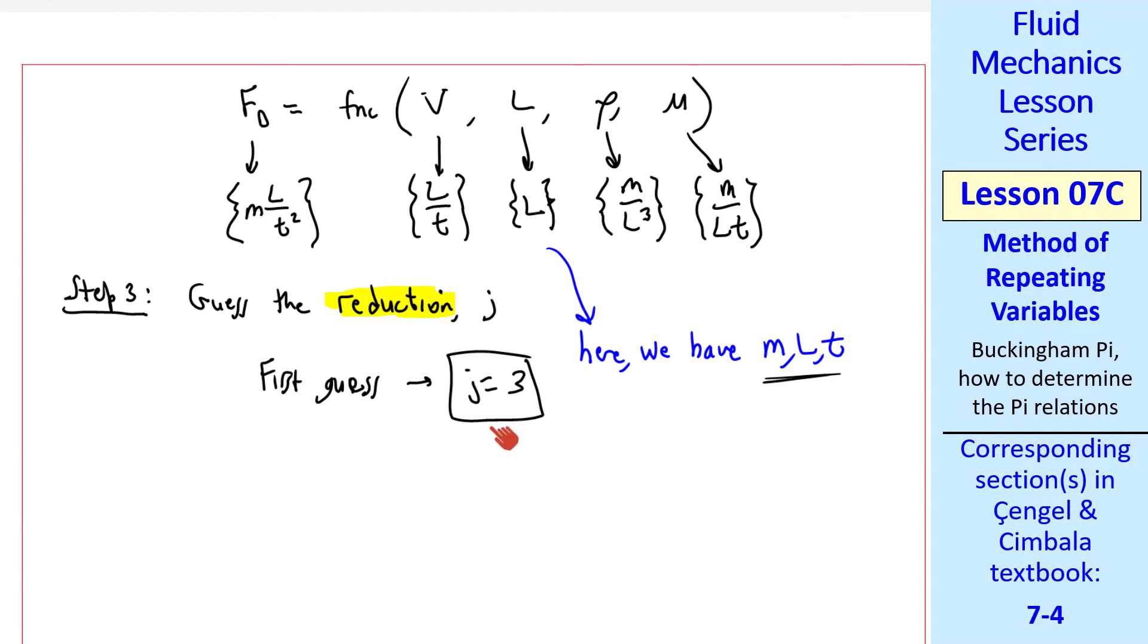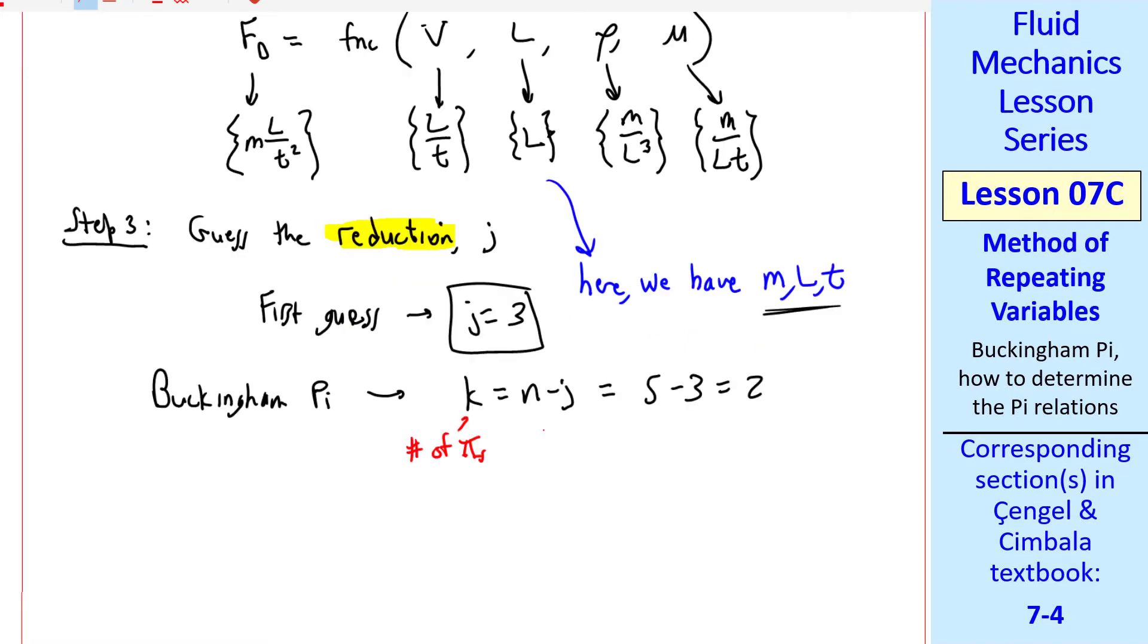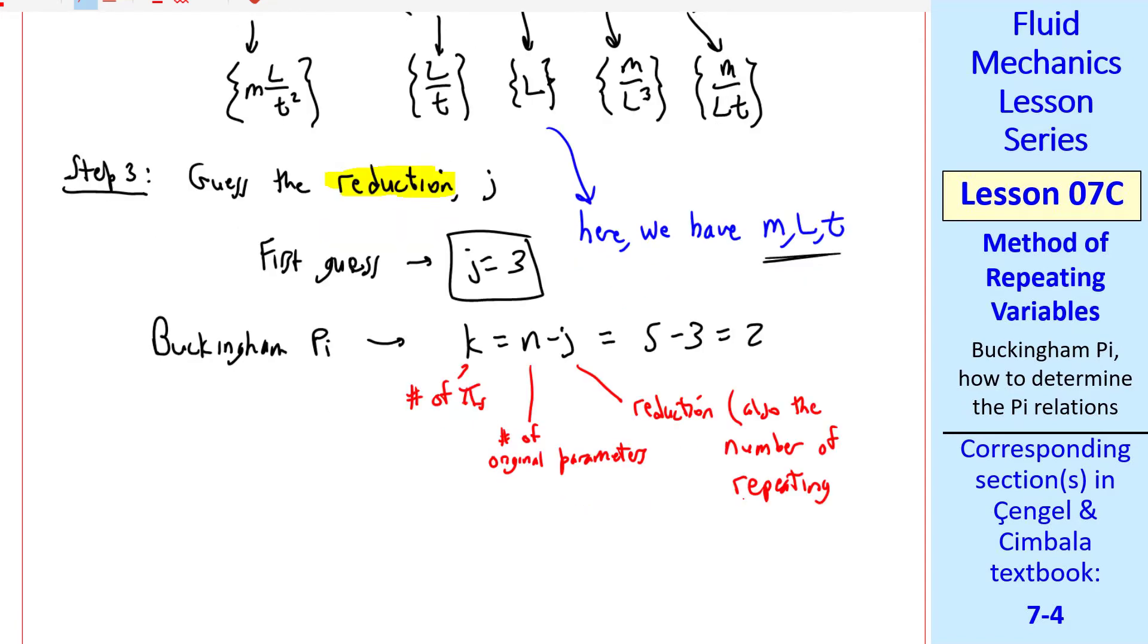As I mentioned before, if our algebra doesn't work out, we'll change j to two, reduce it by one, and then try again. The Buckingham Pi theorem tells us that k equals n minus j. n was five, and j is three. So we get two. k is the number of pis, n is the number of original parameters, and j is called the reduction. j is also the number of repeating variables. Since k equals two, here we expect two pis.